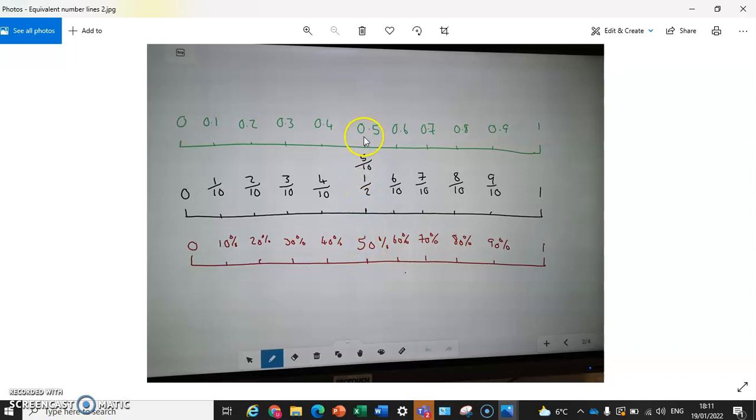And if you divide 1 by 10, so we've divided each of our lines by 10, if you divide 1 by 10, you will get 0.1. So each of these 10 bits is 0.1, so 0.1, 0.2, 0.3, 0.4, 0.5, 0.6, 0.7, 0.8, 0.9, you get to 1.